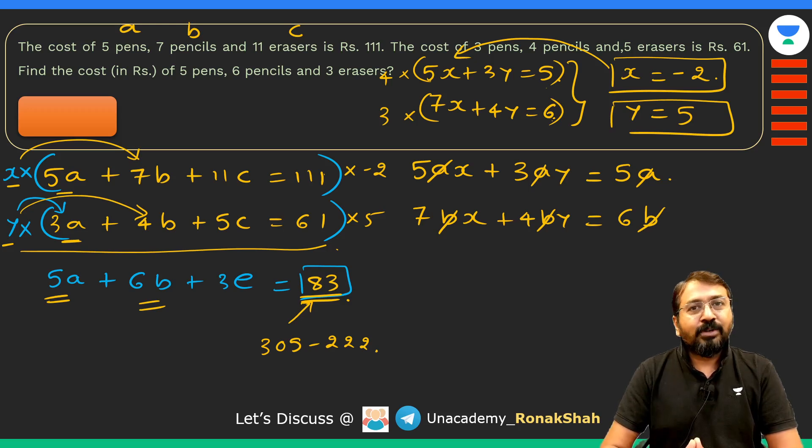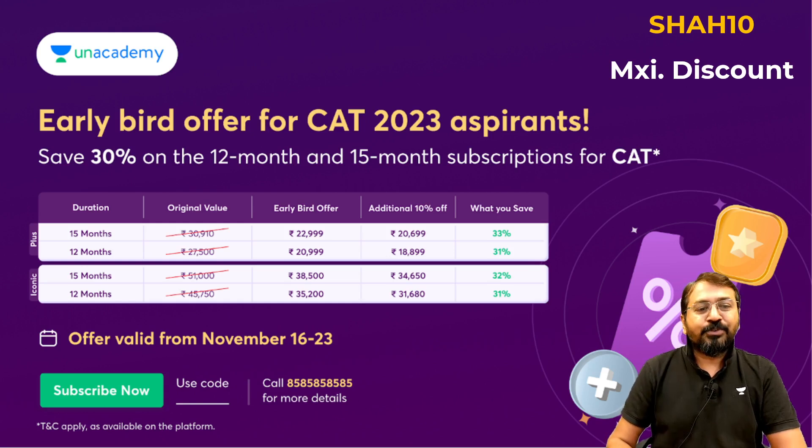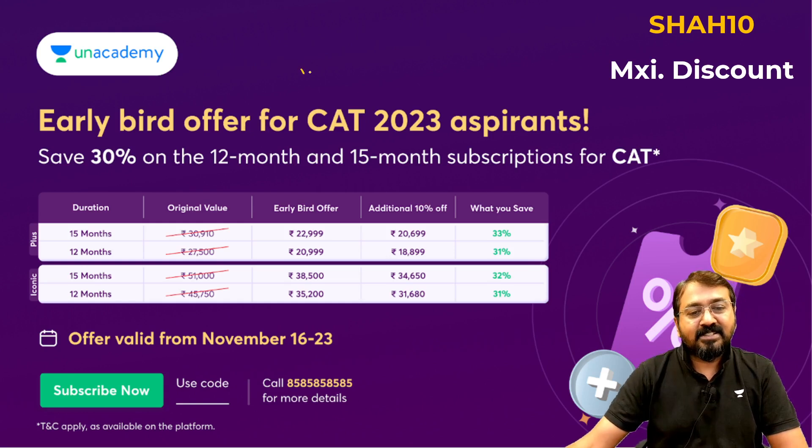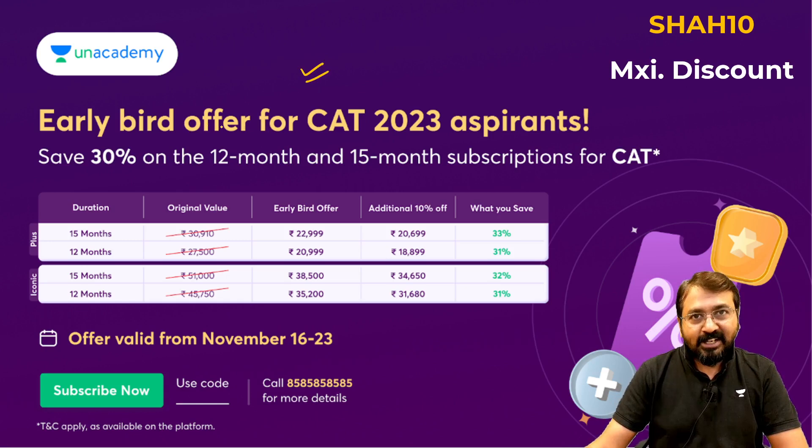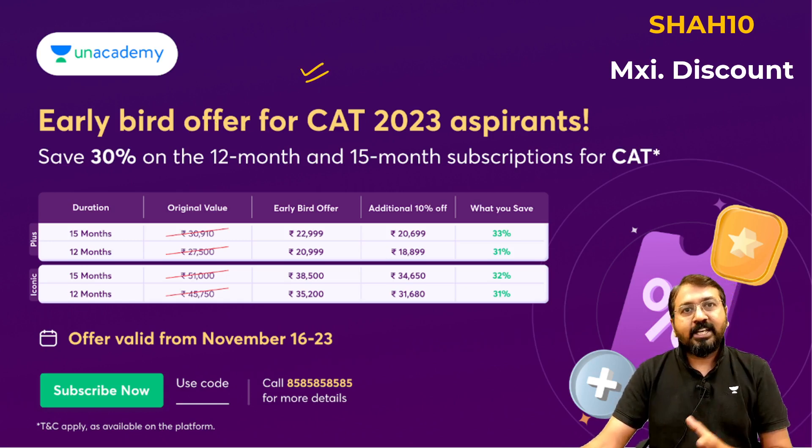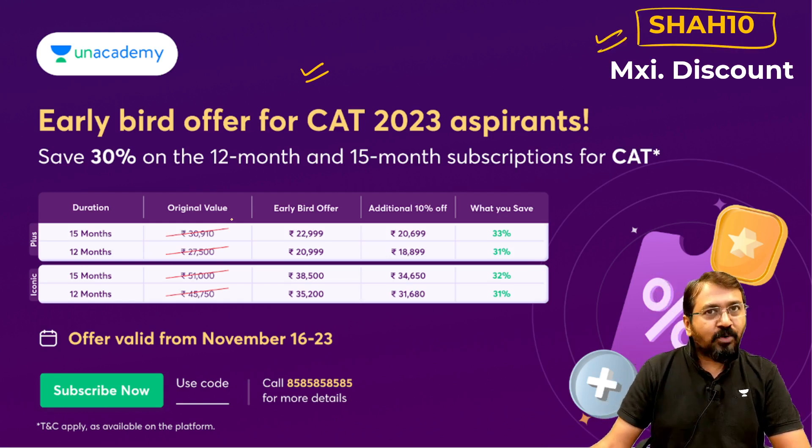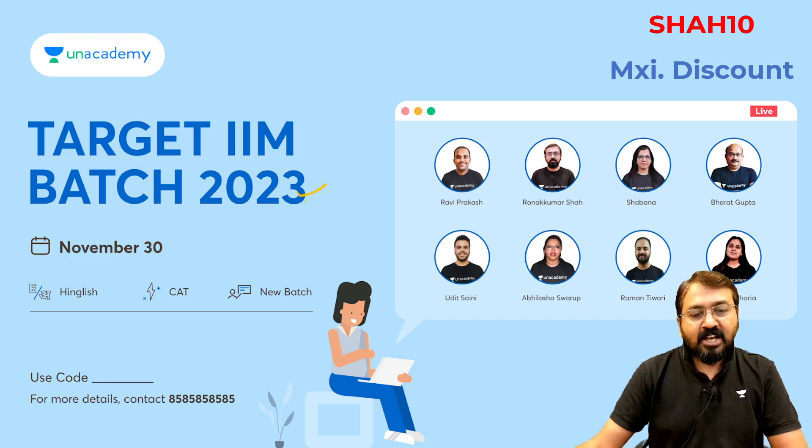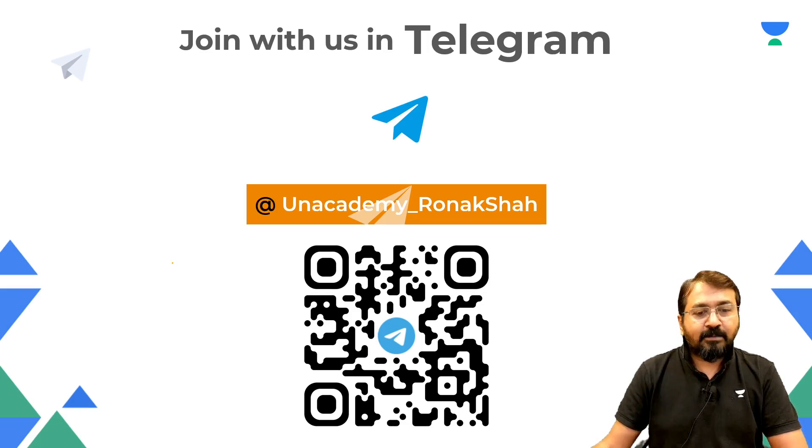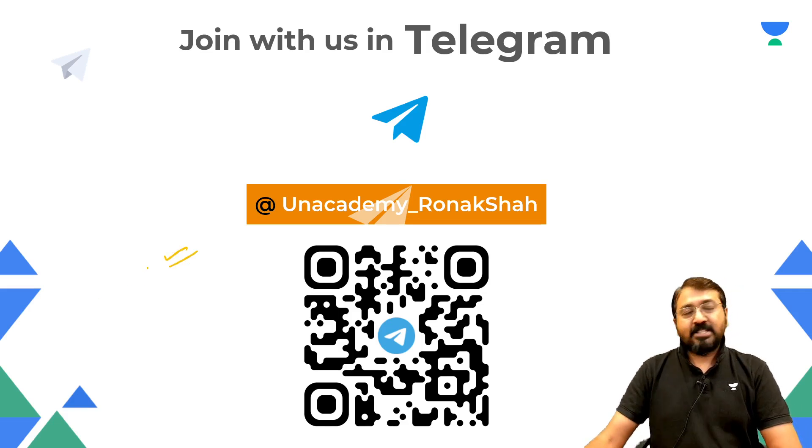I really hope you like this particular approach. Do mention in the comment section and don't forget to hit the like button and share it with all your friends. Apart from that, there is a big offer going on in Unacademy right now. If you are planning to join Unacademy subscription for any entrance exam preparation, you can do it using my code SHAH10. You will get maximum discount. My batches are coming up regularly, so you can join the batches. If you wish to be part of my telegram group, you can quickly scan this QR code or find my telegram channel using this ID. Keep learning with me, stay tuned.